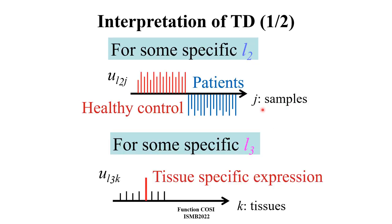Next, this is how to interpret tensor decomposition. For example, if we consider the third-order tensor of gene, sample, and tissue. UL1i is a gene-dependent vector, UL2j is a sample-dependent vector, UL3k is a tissue-dependent vector.